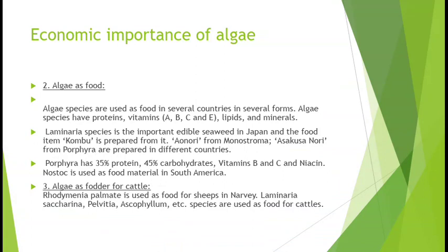Japan, Germany, America mein kiye gaye anusandhanon se yah pramaanit hua hai ki shewal ka poshan maan aur prati ikayi kshetr upaj anya fasalon ki apeksha adhik hai. Porphyra, Ularia, Ulva, Chlorella, Chondrus, Rhodymenia, Laminaria, Sargassum, Arthrothamnus aadi anek vansho mein vibhinn roopon mein khaye jaate hain.